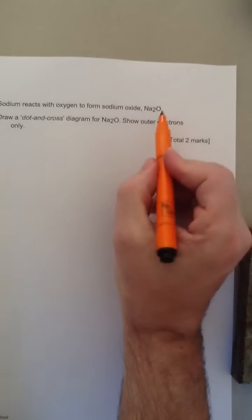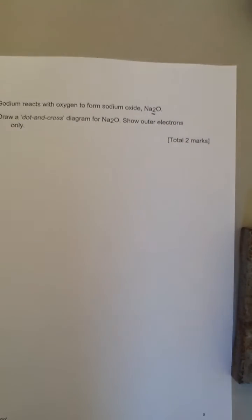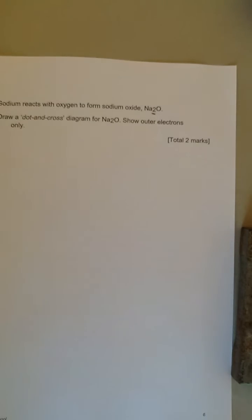It contains two atoms of sodium for every atom of oxygen. It says draw a dot-cross diagram for Na2O. And the important bit is it says show outer electrons only.